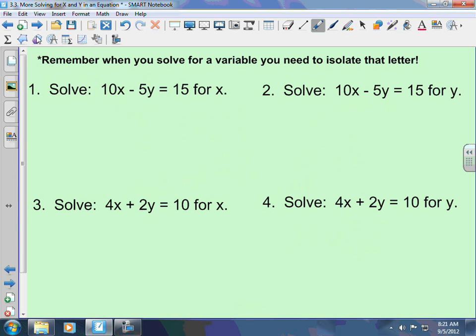Again, we're going to solve for x and y. Remember, when you solve for a variable, you need to isolate that letter. We're getting ready to solve and put things in slope-intercept form. Slope-intercept form, you're going to isolate the y. But now, we're still solving for x and y. So, here, because we're practicing for that, when we divide, we're going to divide by everything. This is what I mean. We're isolating the x.